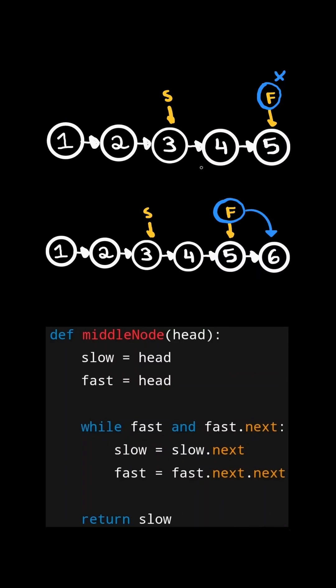But in the first example, fast.next is null. So in the first example, we stop the algorithm and return the node at the slow pointer.